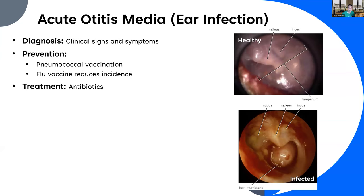Diagnosis is via clinical signs and symptoms — they use an otoscope and look for inflammation, swelling, and pus. Treatment is antibiotics. However, you may not always get antibiotics. If the infection is early enough, antibiotics are going to be effective. But these species are very good at forming biofilms, and if the infection has progressed to the point where there is a biofilm, antibiotics might not only be unhelpful — they may be harmful in the long run, since you're encouraging antibiotic resistance with no clinical improvement.